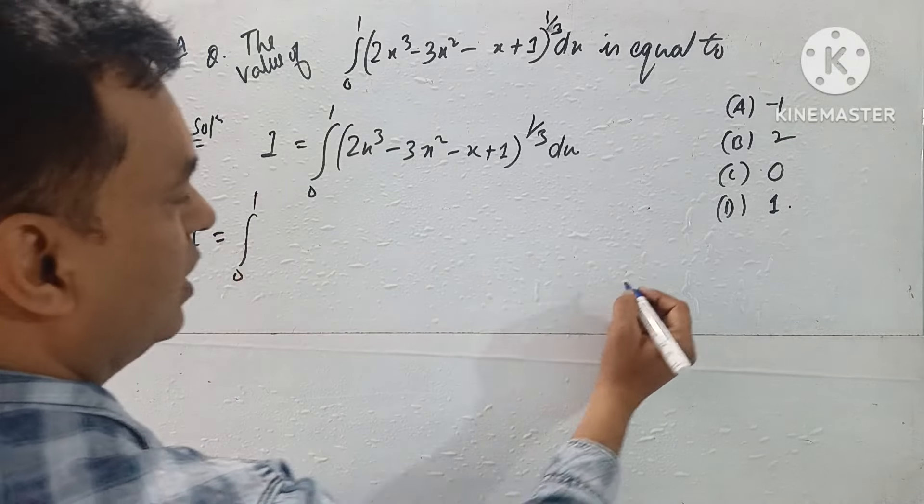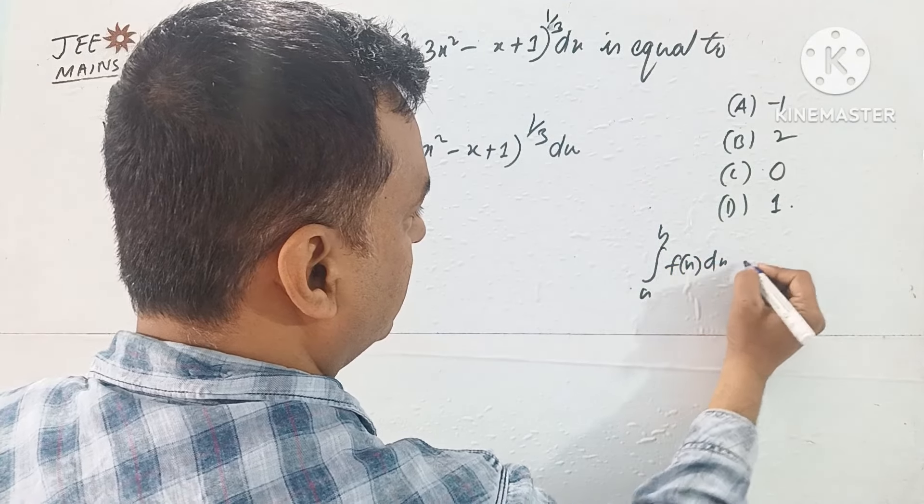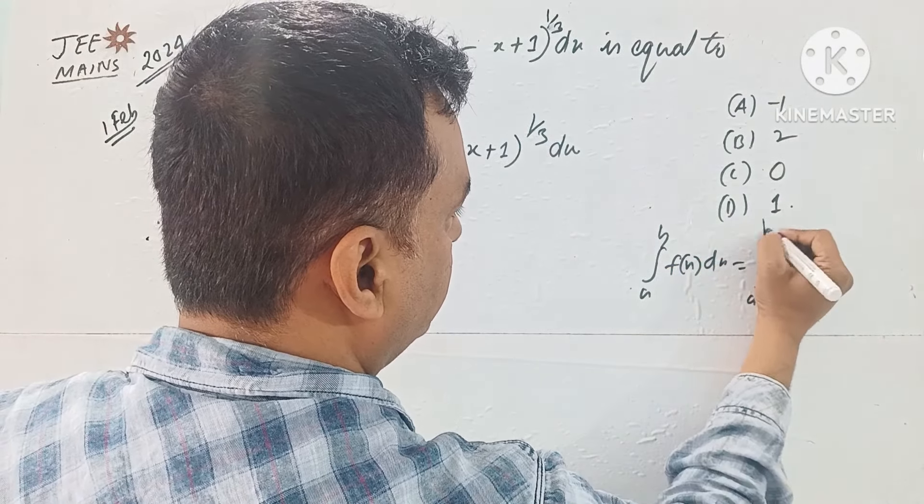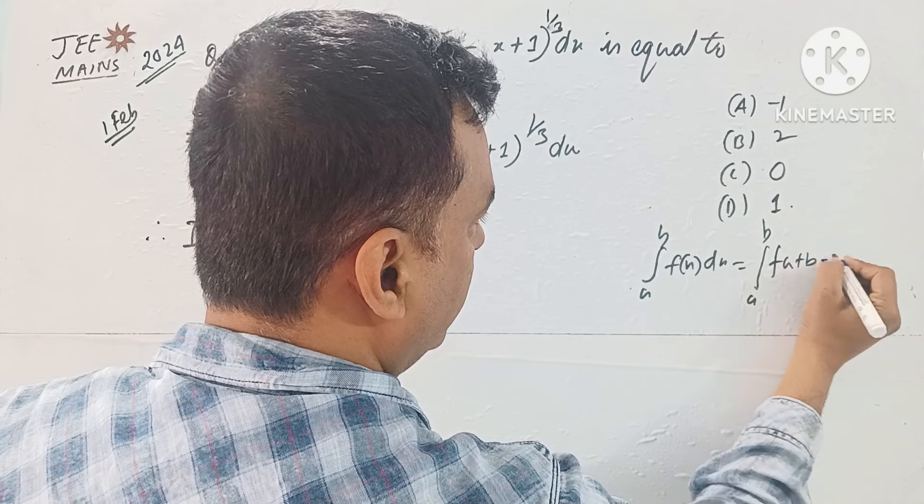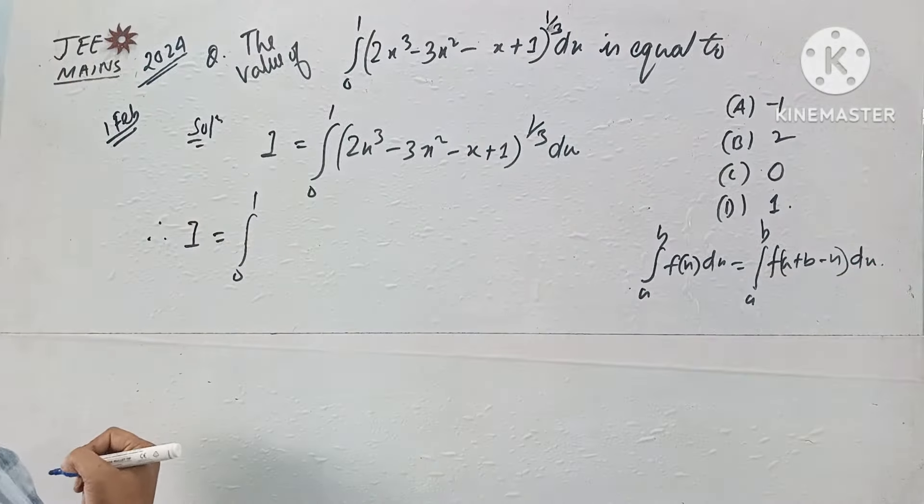Integration 0 to 1, that means integral a to b of f(x)dx equals integral a to b of f(a + b - x)dx. We'll apply this property. Let's see what happens.